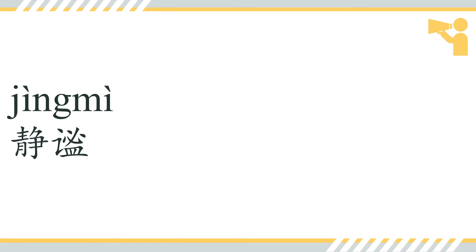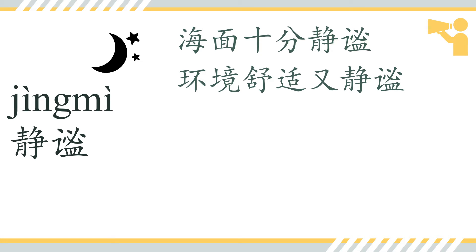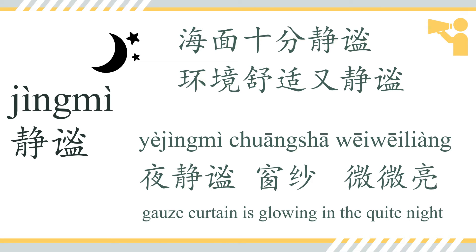静谧 — 静 means 'silent,' and 静谧 means 'extremely silent, tranquil.' We can say 海面十分静谧。 環境舒适又静谧。 Generally used to describe the atmosphere. And here we have: 夜静谧，窗纱微微亮.